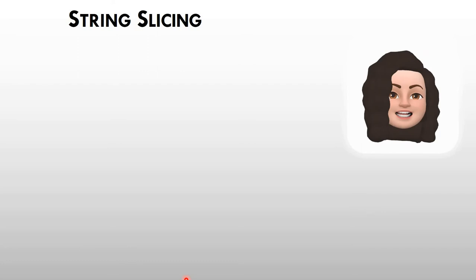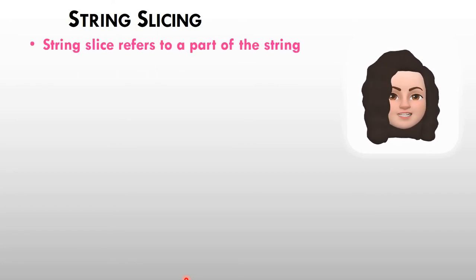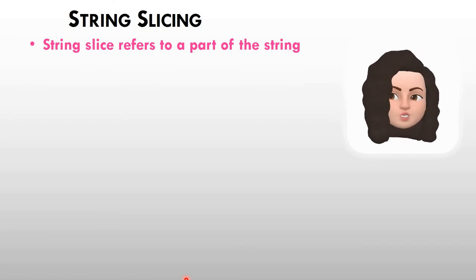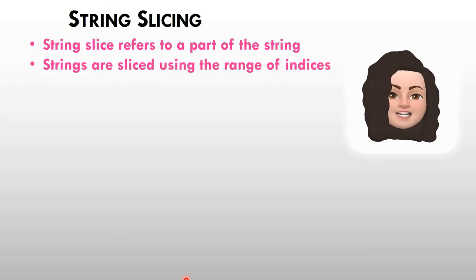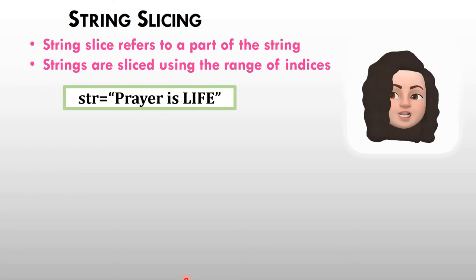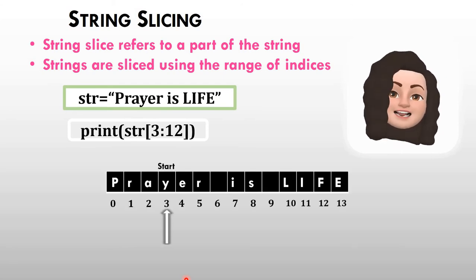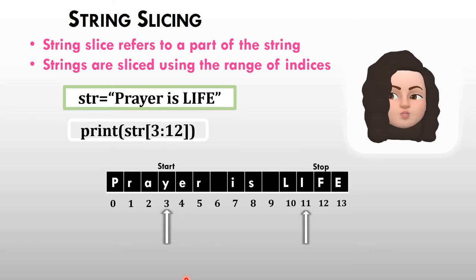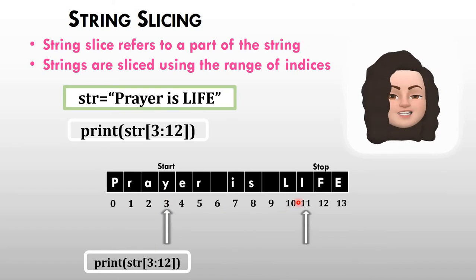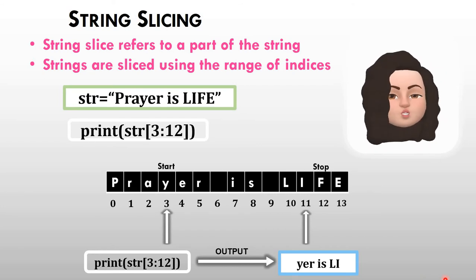String slicing refers to a part of a string — just like slicing an apple and taking a piece, string slicing takes a part of the string. Strings are sliced using a range of indices. For example, str is equal to 'prayer is life'. print(str[3:12]): starting index is 3 and stop index is 12, which is not included — previous is 11 — so the output from index 3 to 11 is 'yer is li'.